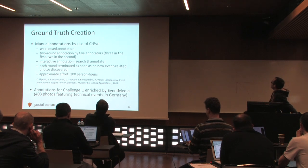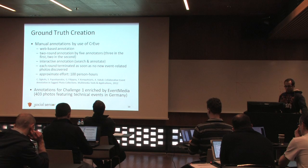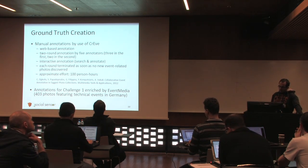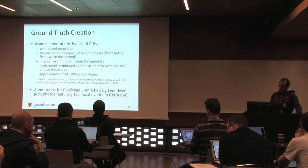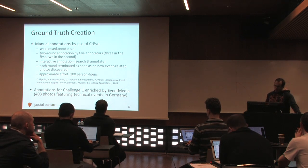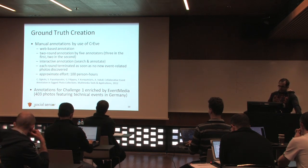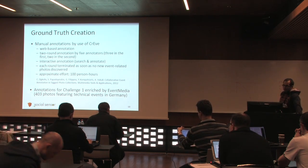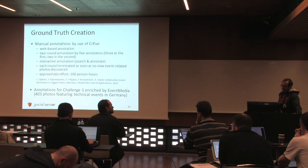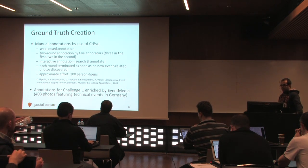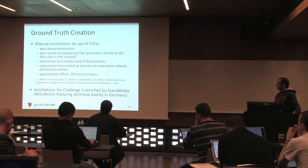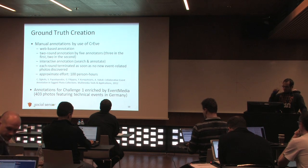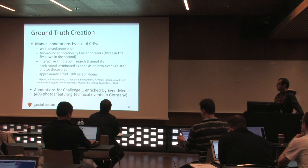Now a bit about the ground truth creation. Most of the annotations come from manual annotation with the help of a web-based tool that we created. There was a two-round annotation to ensure high quality and accurate annotations. There were five annotators from our group: three participated in the first round and two in the second. There was interactive annotation by means of searching, by means of keywords, locations, and so on, and annotating. As I said before, all images were geo-located, which means we could have them separated per city, which helped reduce the target events. And each round of annotation terminated as soon as the annotator could not find new event-related photos in a reasonable amount of time.